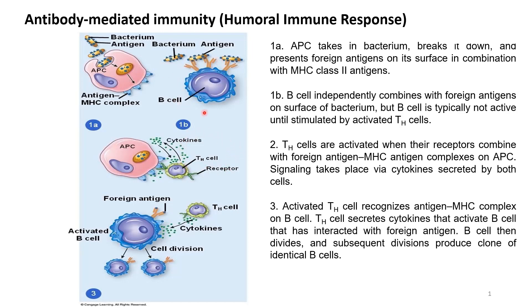B-cells independently combine with foreign antigen on the surface of the same bacterium. The antigen will be broken down into antigen fragments. The antigen fragment will bind to the class 2 MHC of these B-cells, forming an antigen-MHC complex. The antigen-MHC complex will be presented on the surface of these B-cells via antigen presentation.